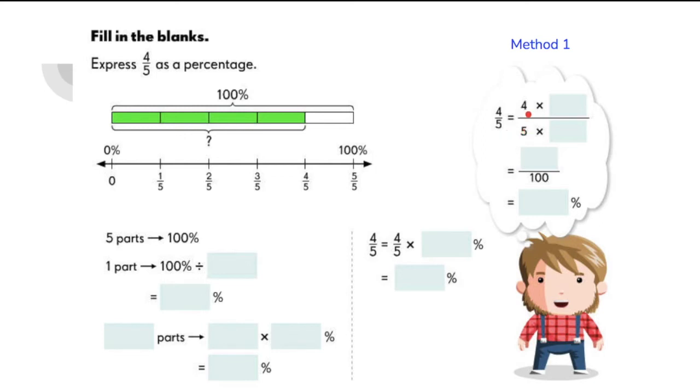The thing is, we just need to multiply the numerator and the denominator by 20. So 4 times 20 will give us 80, 5 times 20 is equal to 100. Now that our fraction has a denominator of 100, it's now easy for us to express this in percent. So 4 fifths is equal to 80%.